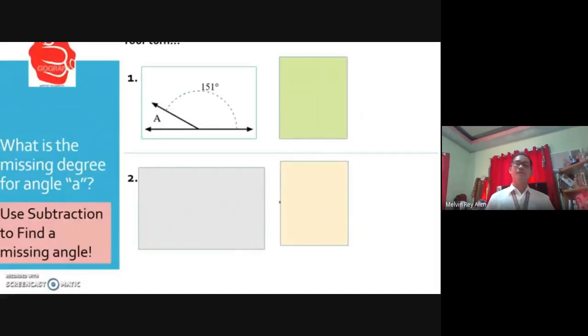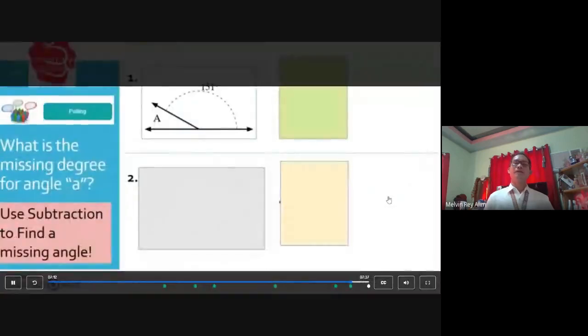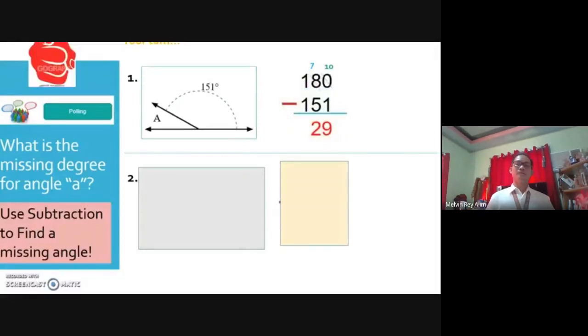Your turn. What's the missing degree for angle A in number one? Use your polling, please. What is the missing angle A? Traces, 180 degrees, 39 degrees, 29 degrees. Answer. Okay. All right, there we go. There is your answer. 180 degrees minus 151 degrees gives you the missing piece of 29 degrees.